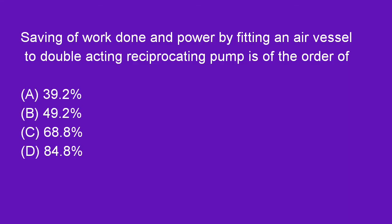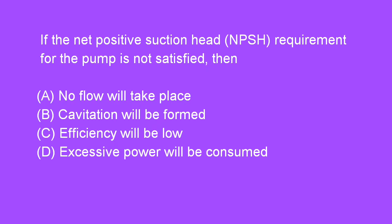Question: Saving of work done and power by fitting an air vessel to a double acting reciprocating pump is of the order of 39.2%. Option A is right. Question: If the net positive suction head requirement for the pump is not satisfied, then cavitation will be formed. Option B is right.